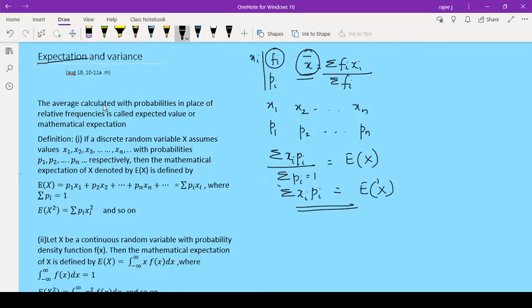Here, expectation of x means what will be the chance of happening that event. Whatever the event is, what will be the chance of happening that event. So, the average calculated with probabilities in place of frequencies - that is called as expected value or mathematical expectation.